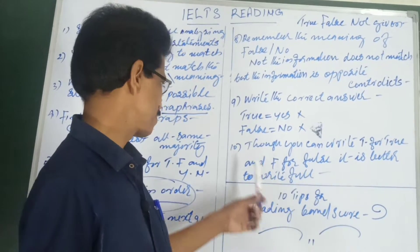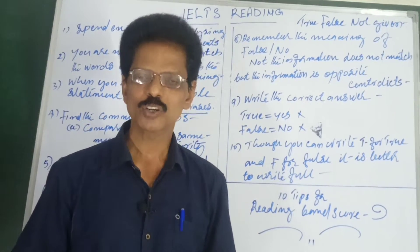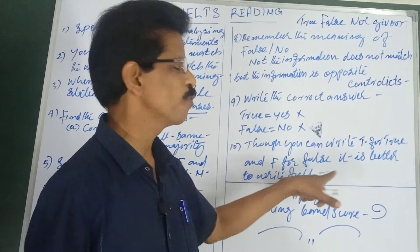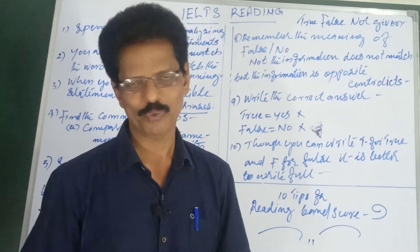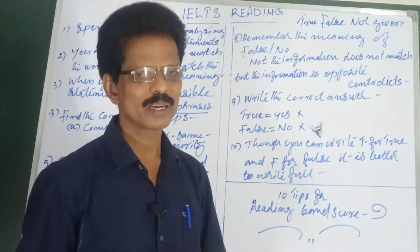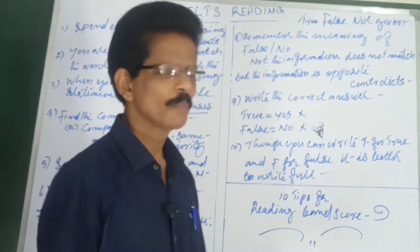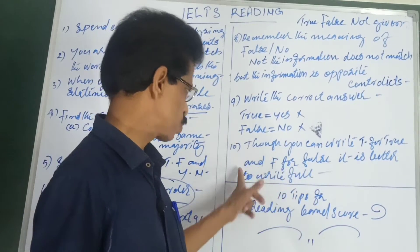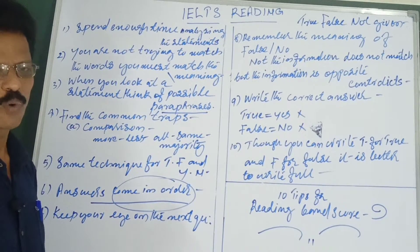Tip number ten: though you can write T for True and F for False, it is better to write the full word. Writing only T or F is risky — if your handwriting is not clear when writing quickly, it may be misread or rejected. Generally marks are given for T, but to be safe, write the full words 'True' or 'False.'